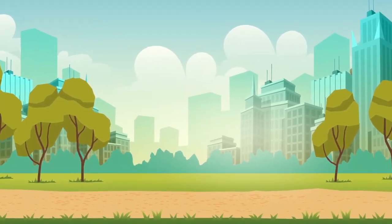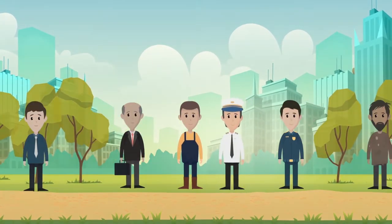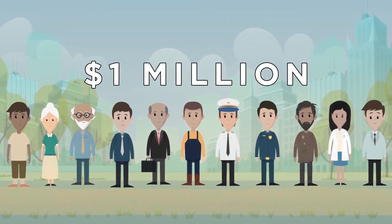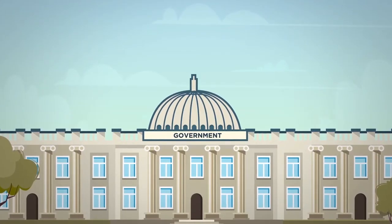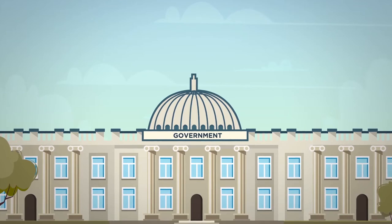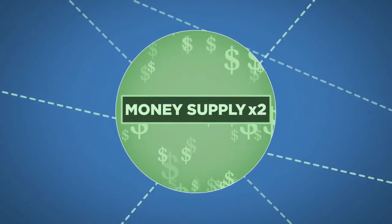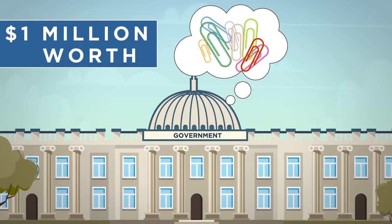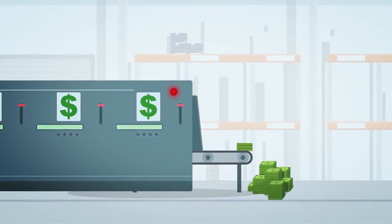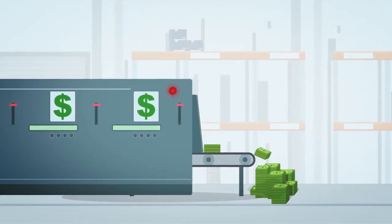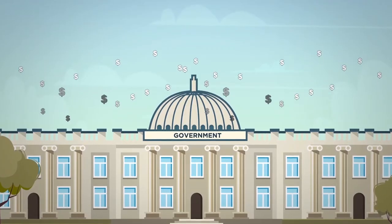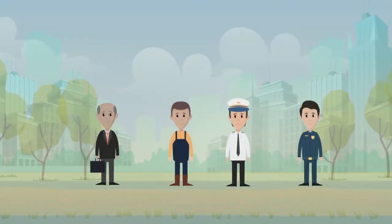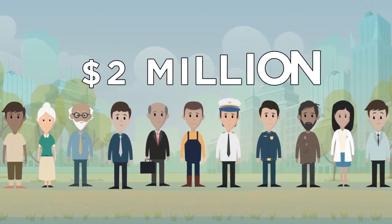For example, let's imagine a simple world where, as of Monday morning, people collectively hold a total of $1 million. On Tuesday, the government decides to double the money supply by printing an additional $1 million and then purchases $1 million in paper clips. The government cranks up the printing presses to print the new money, rather than using tax revenue.